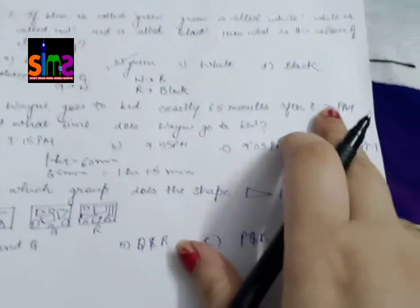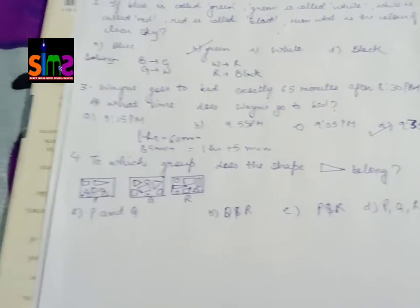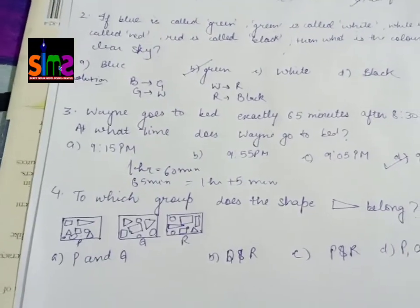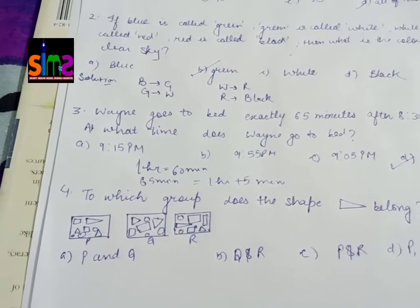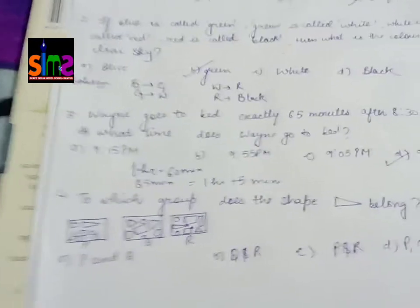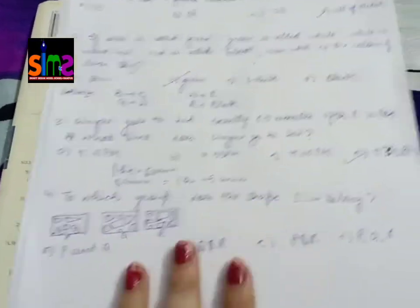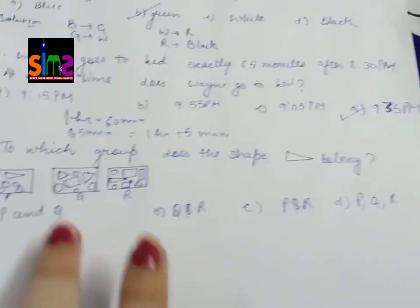After 65 minutes it goes to sleep. So add 1 hour to 8:30. 8:30 plus 1 hour is 9:30. And what is 5 minutes? 9:35. So 9:35 PM is correct.